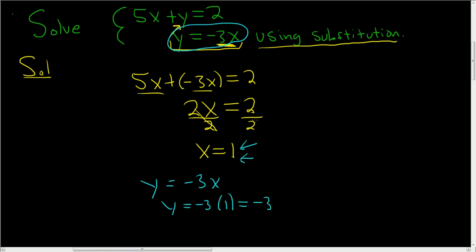So we're done. The final answer is an ordered pair. So the answer should look like x, y. So 1, negative 3. And that's it.